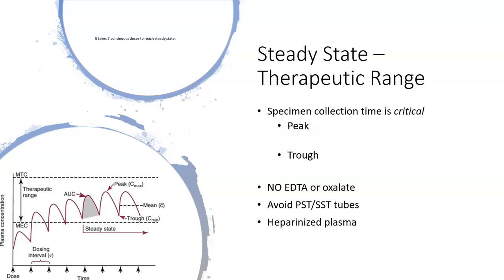There are different peak times for different drugs and they vary immensely. Some drugs you only do troughs on, just to make sure it's staying in the effective range, because toxicity isn't too big of a concern. Some you do peaks and troughs to make sure it's staying in range and not going to damage your kidneys or eyes.